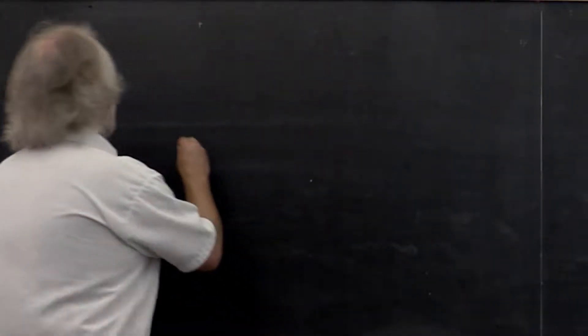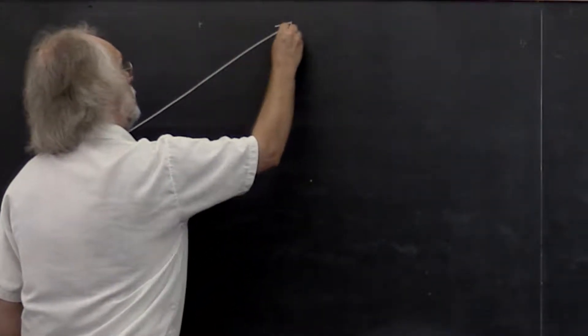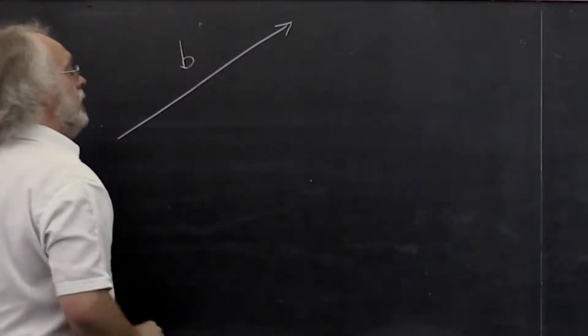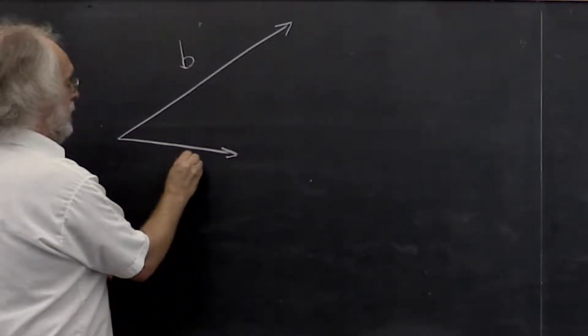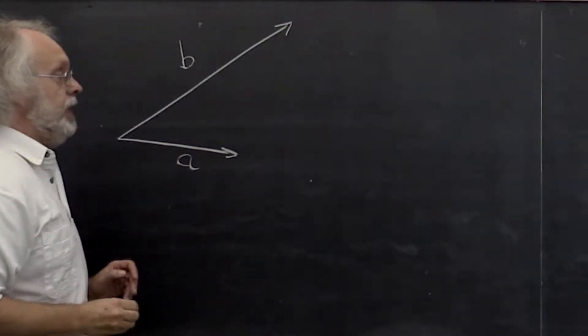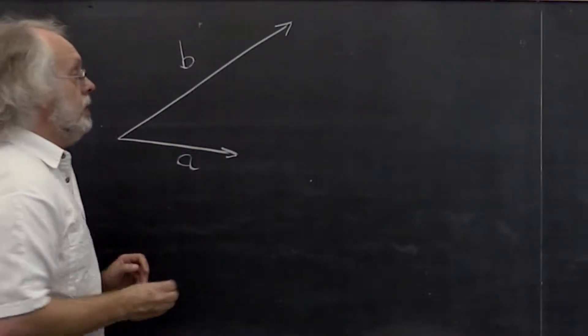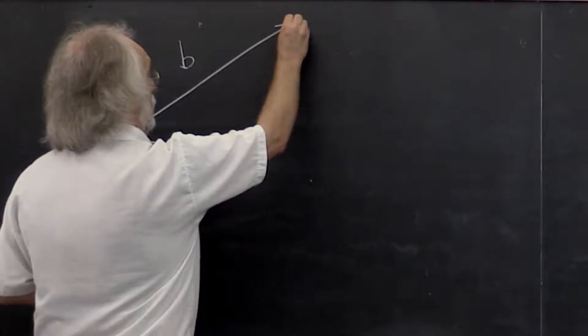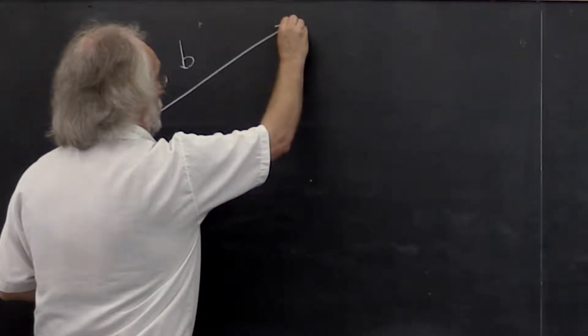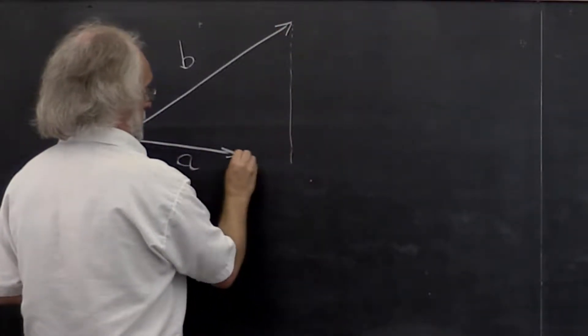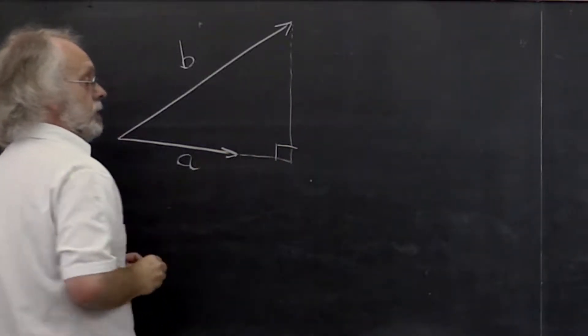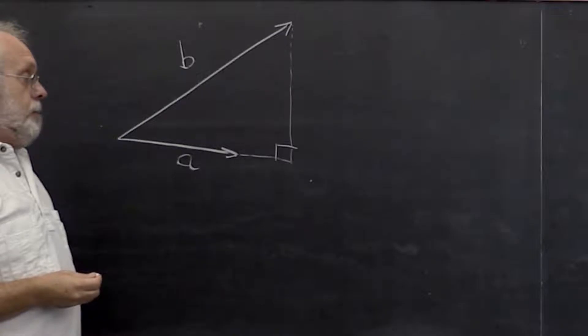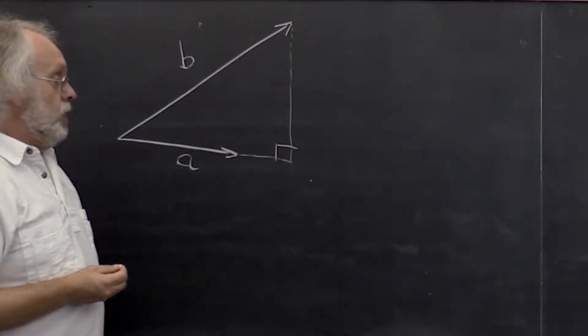What if we have a vector B? And what if we would like to know what the component of B is in the direction of A? That component we can picture with this triangle right here, where this is a right triangle.